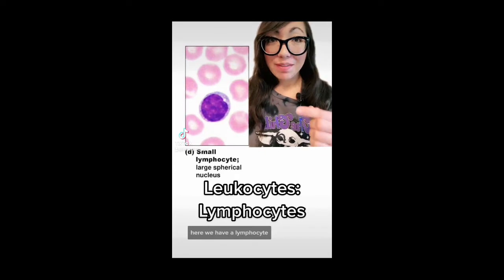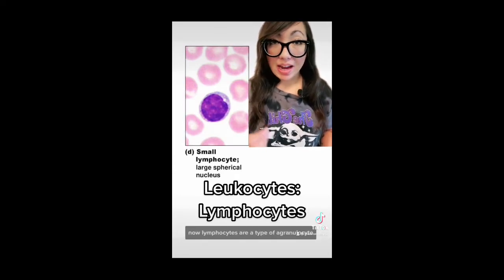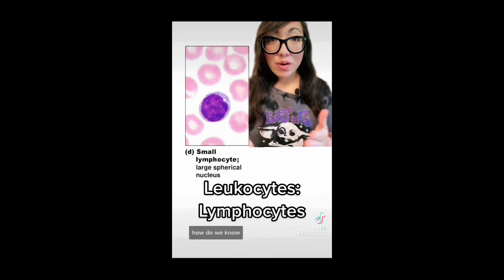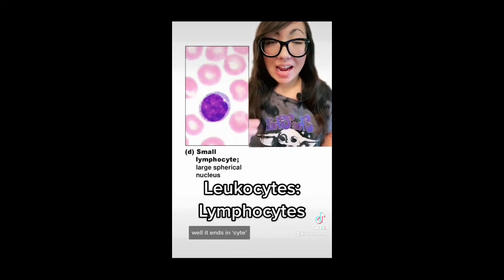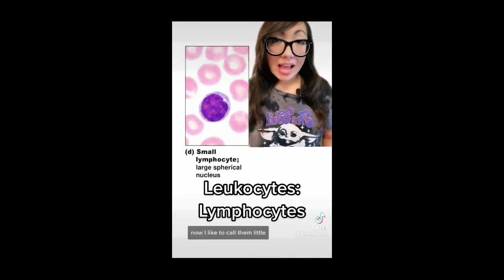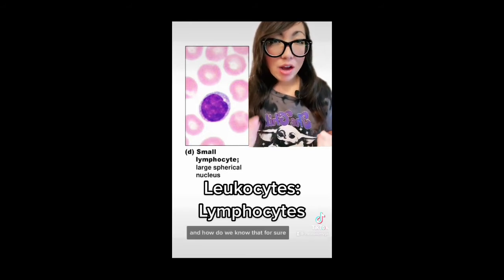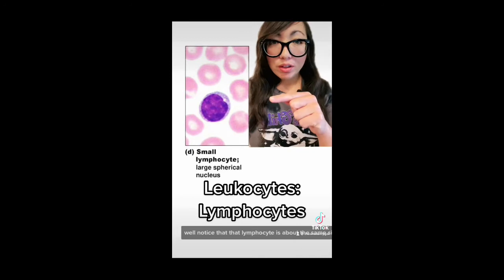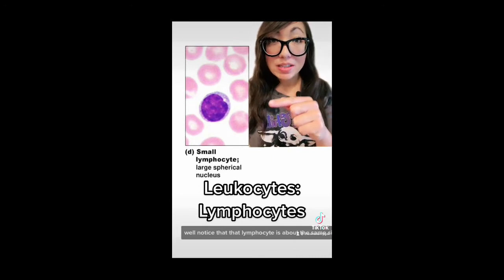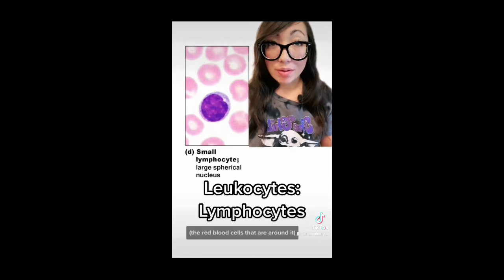Here we have a lymphocyte. Lymphocytes are a type of agranulocyte. How do we know? Well, it ends in 'cyte.' Agranulocytes lack visible granules within the cytoplasm. I like to call them 'little lymphocytes' because these are the smallest of all the leukocytes. Notice that the lymphocyte is about the same size as the erythrocytes — the red blood cells — that are around it.